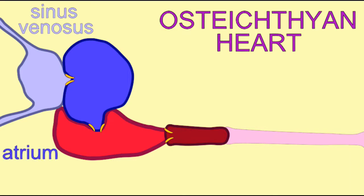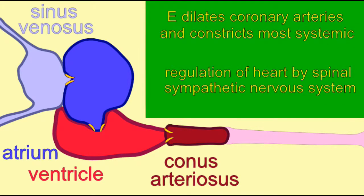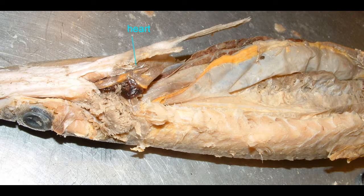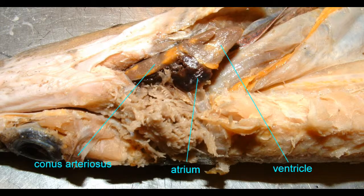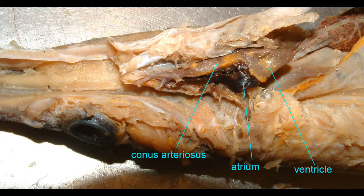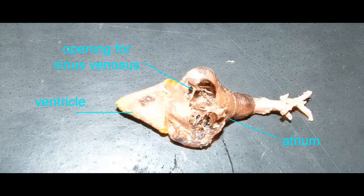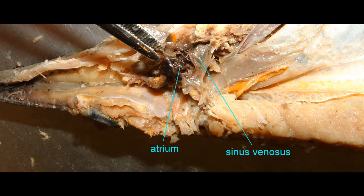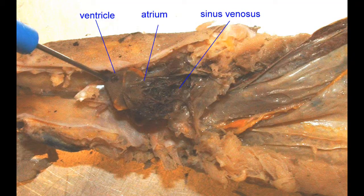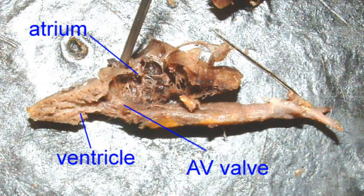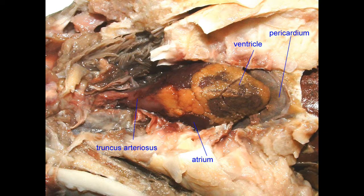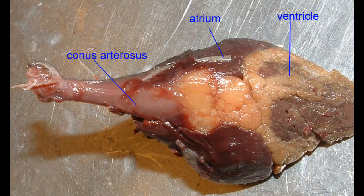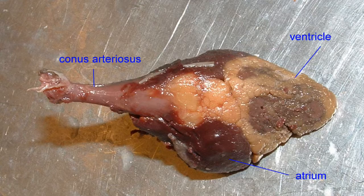The hearts of bony fish are essentially the same as the hearts of sharks, as is evidenced here in two primitive bony fish: the gar, which is a chondrostean, and a bowfin, which is a primitive neopterygian. Blood enters in the sinus venosus and is pumped into the single atrium, from there to the single ventricle, which is more muscular given that it generates the blood pressure, and from there into the conus arteriosus. There are atrioventricular and semilunar heart valves.